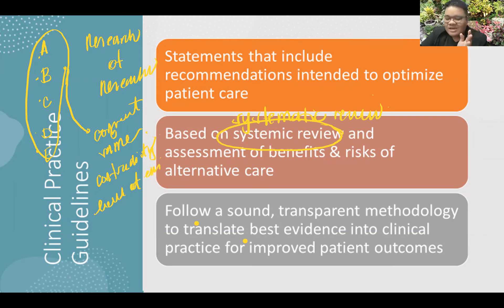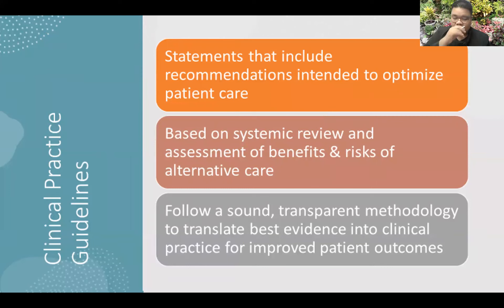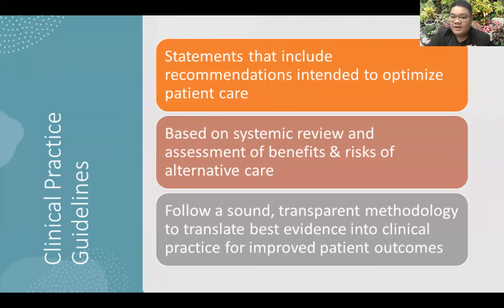For example, a clinical practice guideline would say: Drug A, 500 milligrams, is recommended for COVID, followed by its level of evidence — say, Level D. If the level of evidence is low, it means only a few studies have been conducted. But if it is a high level of evidence, it means the drug was found effective in studies from the Philippines, Singapore, the US — it becomes highly recommended.